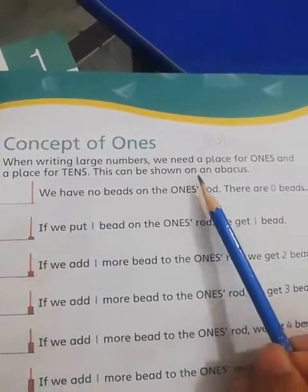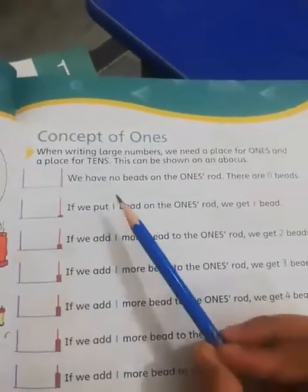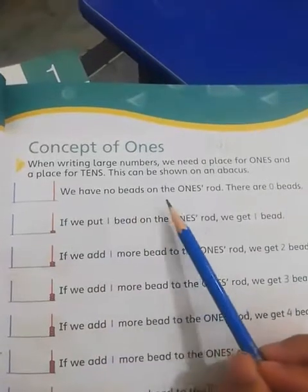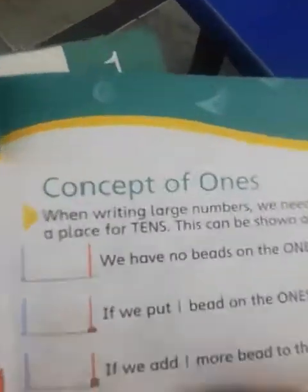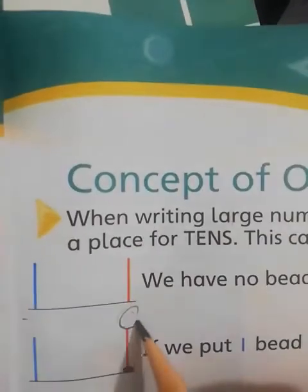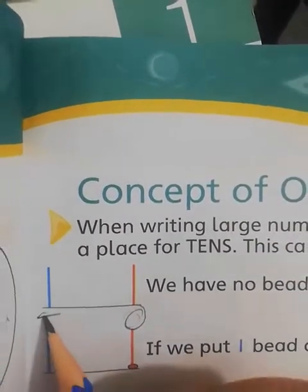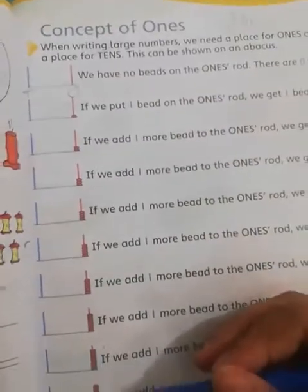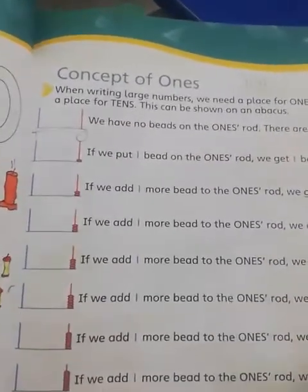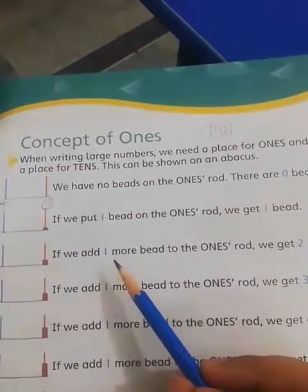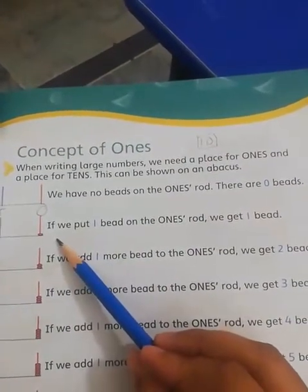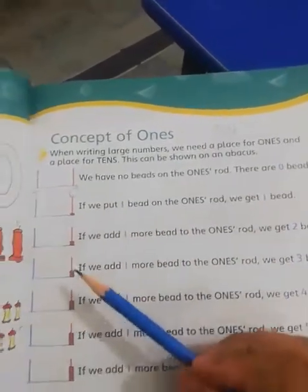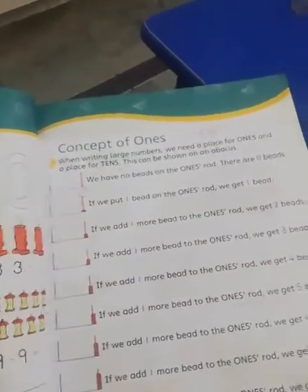This can be shown on an abacus. We have no beads here on the ones rod — there are zero beads. The single digits go on the ones place. If we add one bead on the ones rod, we get one bead; if we add two beads, we get two — the beads tell you the ones value.